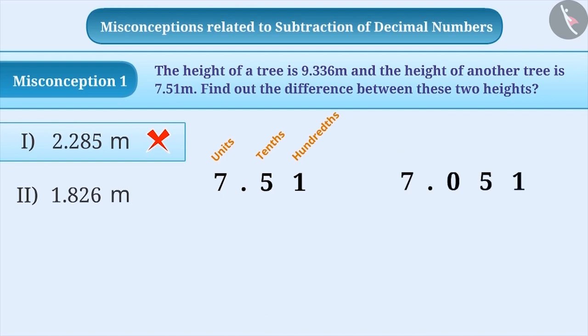But in the number after placing 0, there are 7 units, 0 tenths, 5 hundredths and 1 thousandth. The value of these two numbers is not equal.